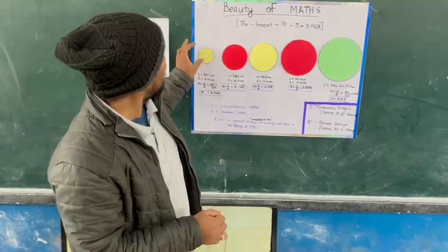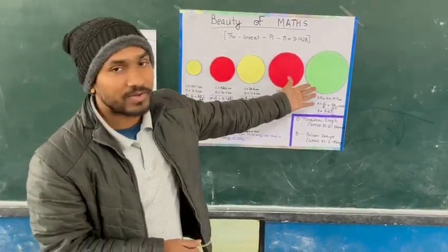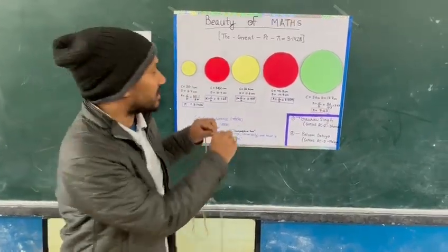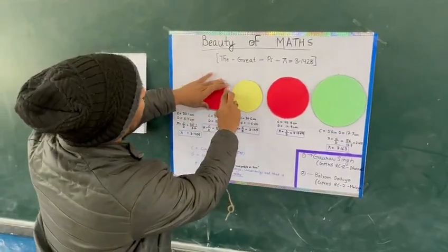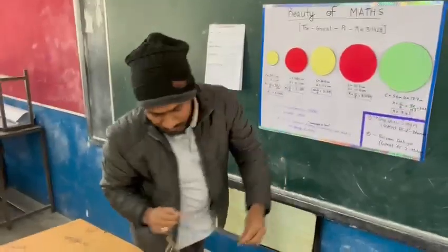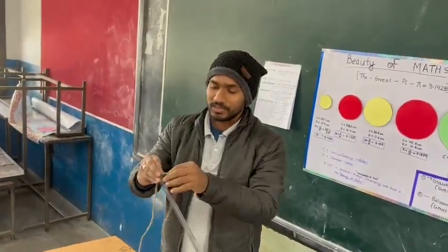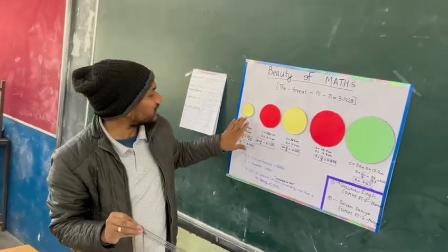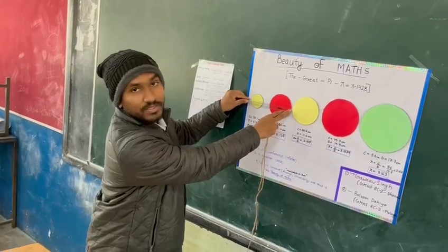We have taken circles of different sizes like this and arranged them. We have measured the circumference using a thread — encircling the thread around each circle — and then measured the length using a scale. Similarly, we have measured the diameter of these circles.